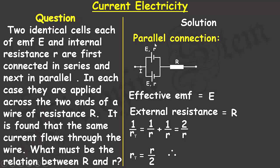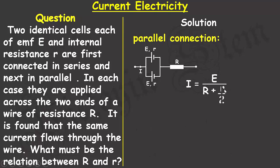Applying Ohm's law for the cells when connected in parallel, the current flowing through the circuit will be equal to the effective EMF E divided by the external resistance capital R plus the total internal resistance R subscript T. Substituting R subscript T equals r/2 and resolving the right-hand side gives 2E divided by 2R plus small r.